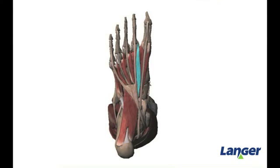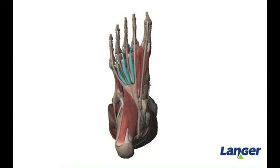The first lumbrical originates from the medial side of the tendon and inserts onto the dorsal surface of the second toe. All of the other three lumbricals are bipennate muscles and originate from adjacent sides of the tendon, inserting onto the extensor heads of the three digits. The function of the lumbricals is to flex at the MTP joints whilst extending the interphalangeal joints.